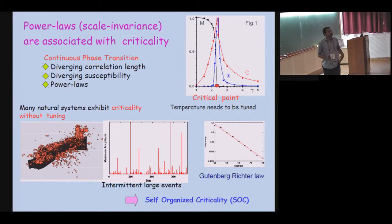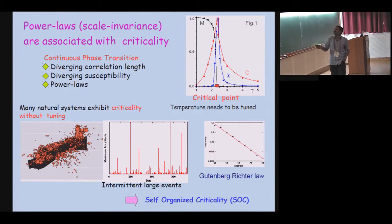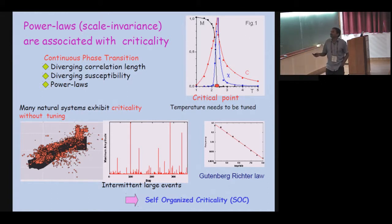As you know from many talks, a critical point is associated with scale invariance or power laws. Basically there is a tuning parameter; you tune it and at some point you have this divergence of susceptibility or specific heat. These are power laws. But in nature there are many examples where criticality occurs without any tuning parameter.